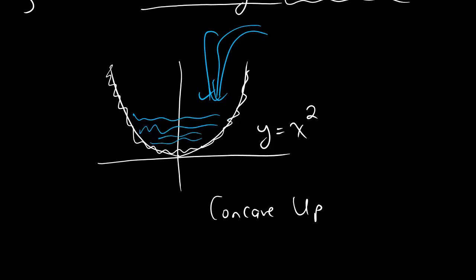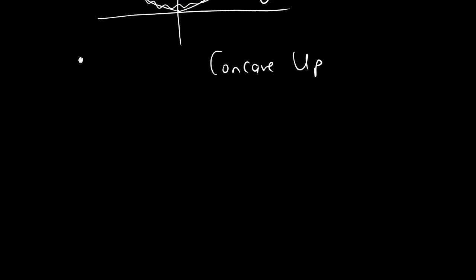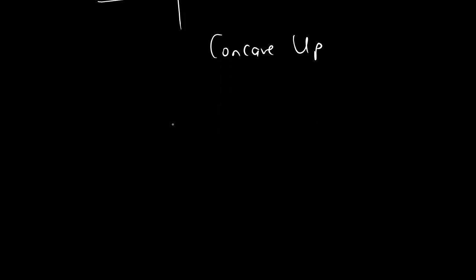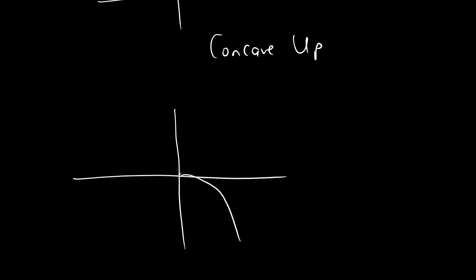An example of something that's concave down: the easiest example is to take the exact same graph, flip it upside down, and draw that. So if you've got something that looks like this, this is concave down.